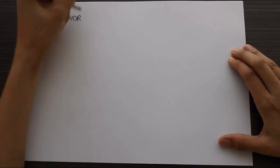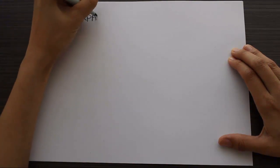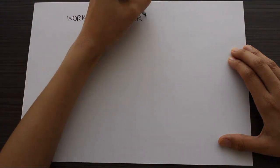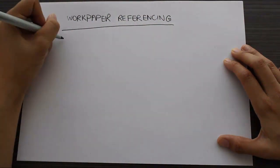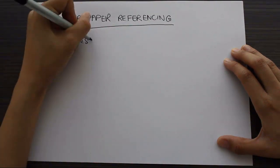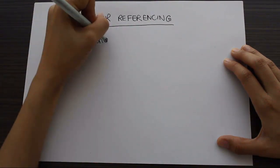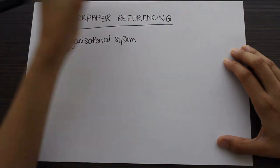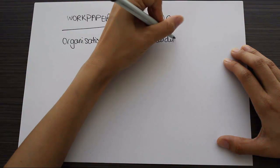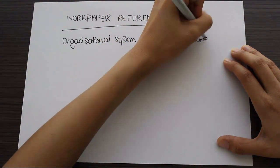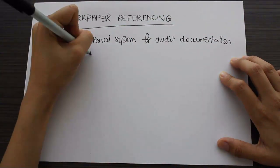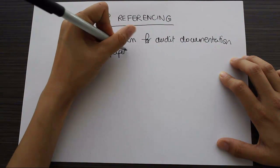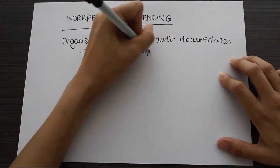This video today is going to be all about work paper referencing. So what exactly is work paper referencing? It's some sort of organizational system for all of our audit documentation. That audit documentation we call work papers, and sometimes you might see it shortened to WP for short.